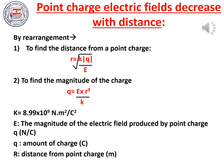By rearrangement, we can find the distance from the point charge if we know the electric field: r = √(K|Q| / E). We can also find the magnitude of the charge using Q = E·r² / K, where K = 8.99 × 10⁹ N·m²/C². E is the electric field in newtons per coulomb, Q is the charge in coulombs, and r is the distance from the point charge in meters.